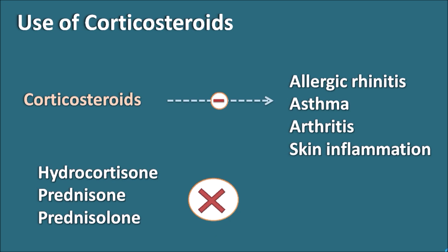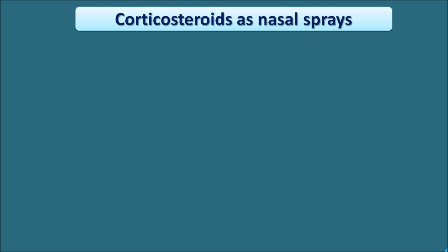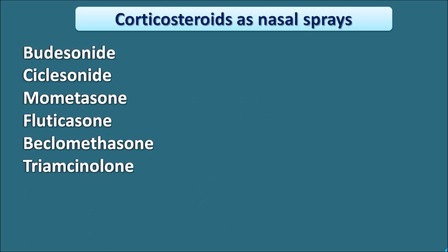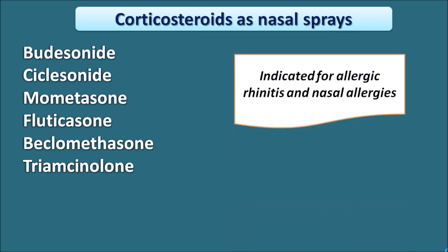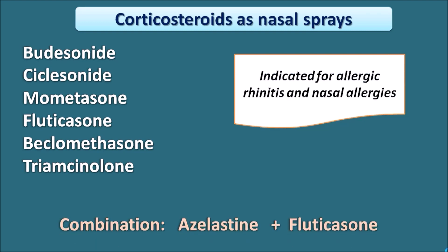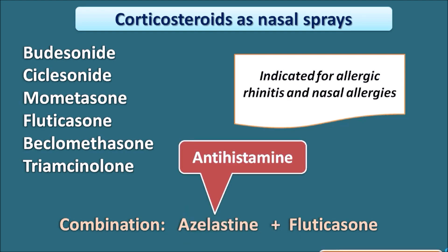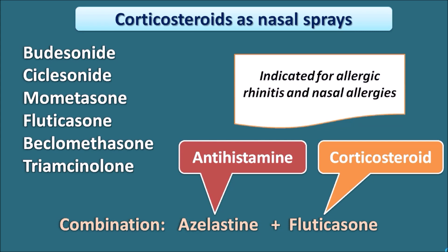The corticosteroids given as nasal sprays include budesonide, ciclesonide, mometasone, fluticasone, beclomethasone, and triamcinolone. These are indicated for allergic rhinitis and nasal allergies. A combination of azelastine plus fluticasone can also be given as a nasal spray, combining an antihistamine with a corticosteroid.